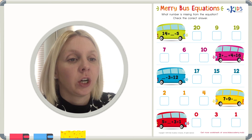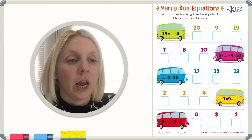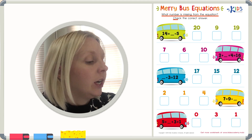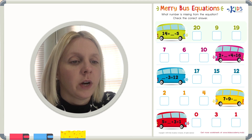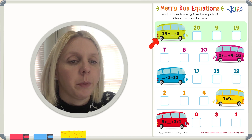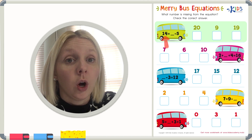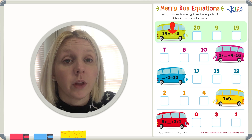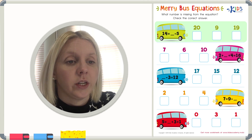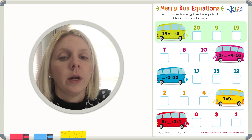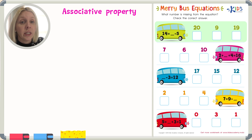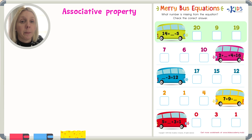Today we have a worksheet called Mary Bus Equations, and the directions say: what number is missing from the equation? Check the correct answer. So down here we've got several different equations on these buses and when you just glance at them they look almost impossible because it looks like the number we're trying to find is right in the middle of the equation. But I'm going to teach you a rule in mathematics called associative property, and associative property makes this possible for us to find this missing answer.